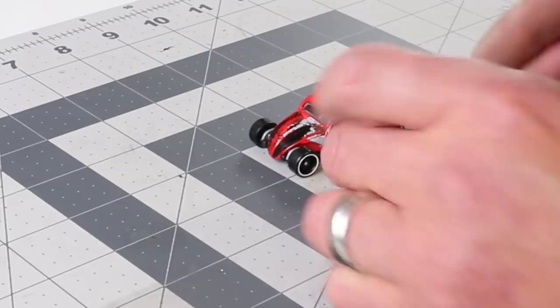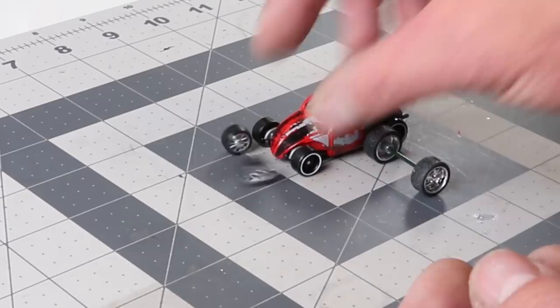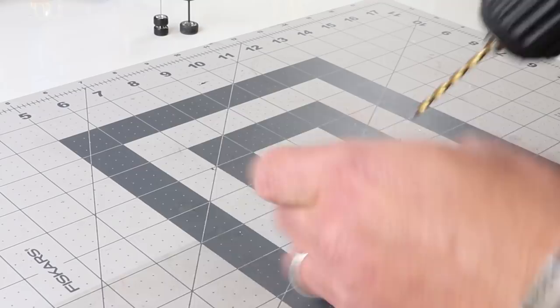All right, so I have a Hot Wheels Volkswagen Rat Rod and I found some wheels from a Big Time Muscle and also a Hot Wheels for the front. They're very similar, they're not exact, they look pretty close, so I went ahead and figured I'd go with it.